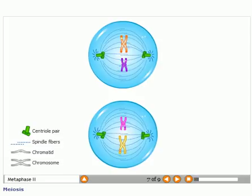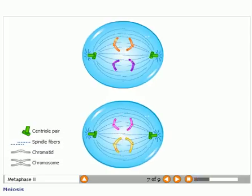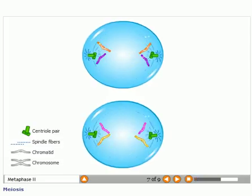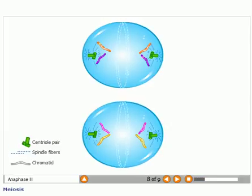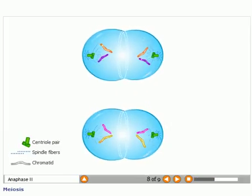During the second division, chromatid pairs split at the center and move to opposite centrioles along spindle fibers. The cell membranes pinch inward and spindle fibers begin to break up.